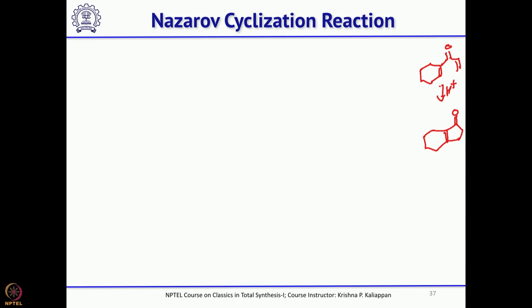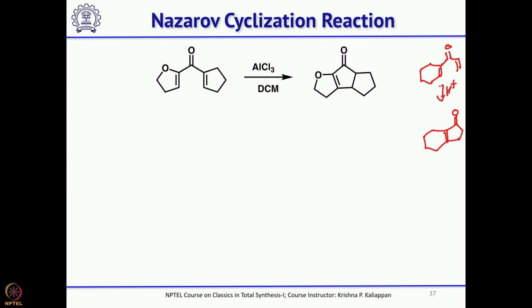You can also control the regioselectivity of the double bond formed. For a given dienone, there are two possibilities for where the double bond ends up, but only one forms selectively. The reason is that as soon as the Lewis acid coordinates, this particular double bond migrates preferentially because of the lone pair present, and then the next double bond migrates, giving one product as the major product.